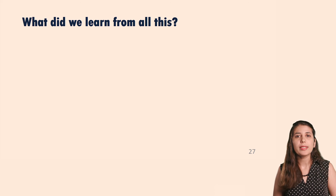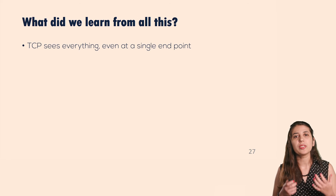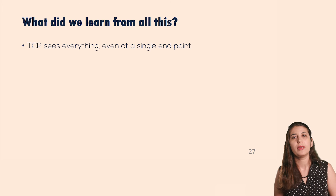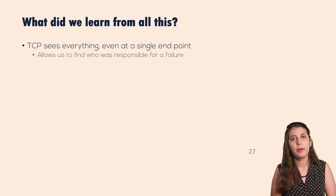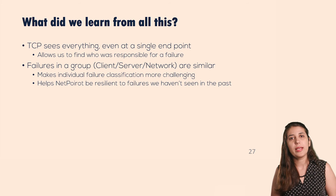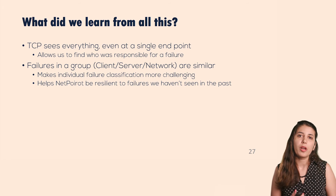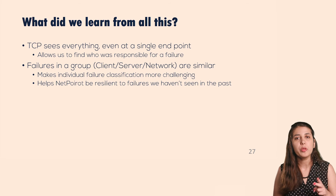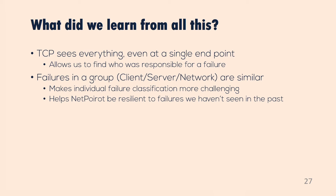Before showing results, let me discuss what we learned. First, TCP actually sees everything even if we only look at TCP data from the client side — it goes through the client, the service, and the network, and sees a failure no matter where it happened. We also found that failures within a class — such as high CPU load, high memory load, or high IO load on the client side — have very similar characteristics. This means we can't easily distinguish the exact failure type within a class, but more importantly, it makes NetPero resilient to failures we haven't seen before. Even without training examples of high CPU load on the client, we can still identify it correctly as a client-side problem during testing.